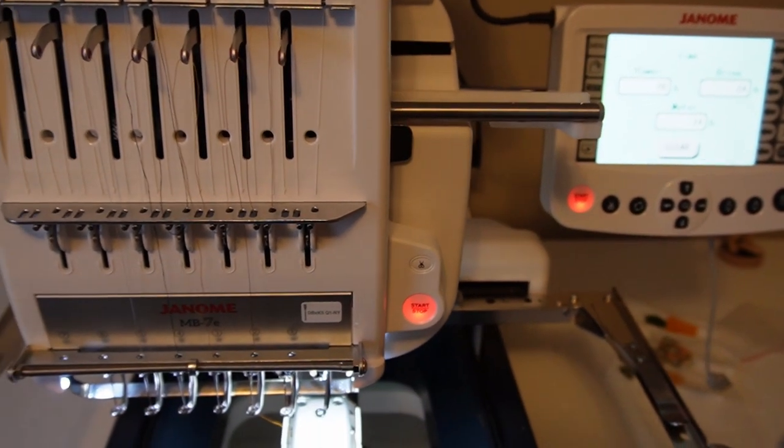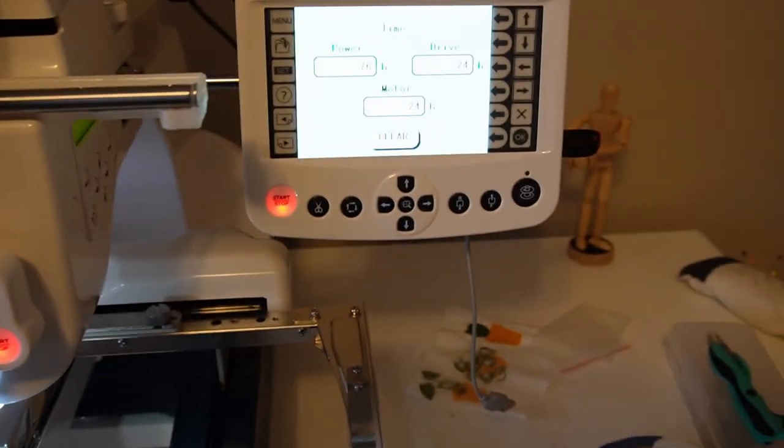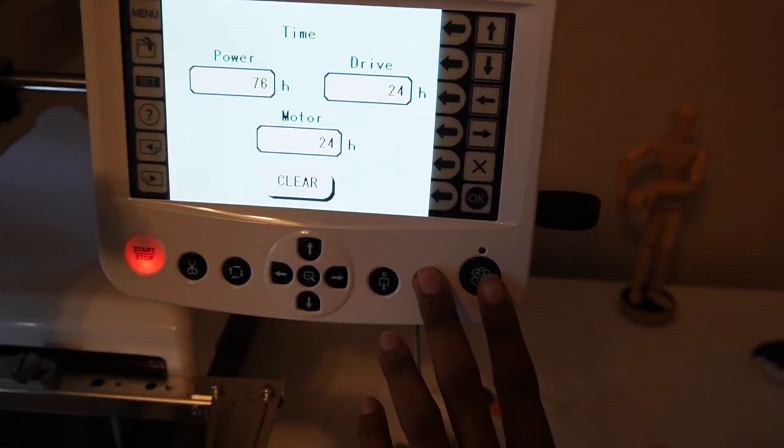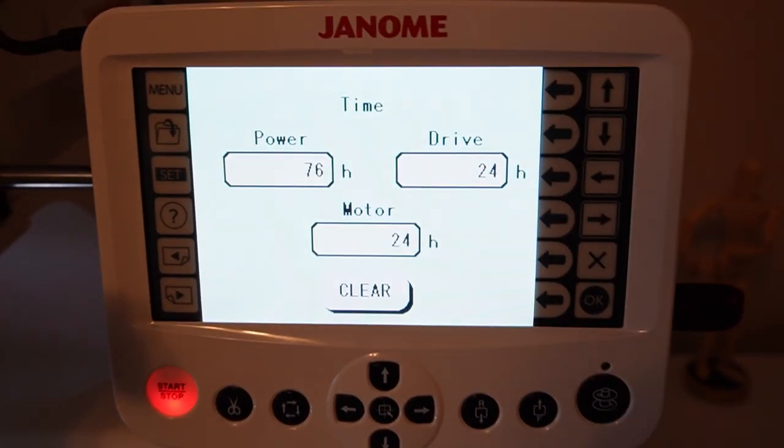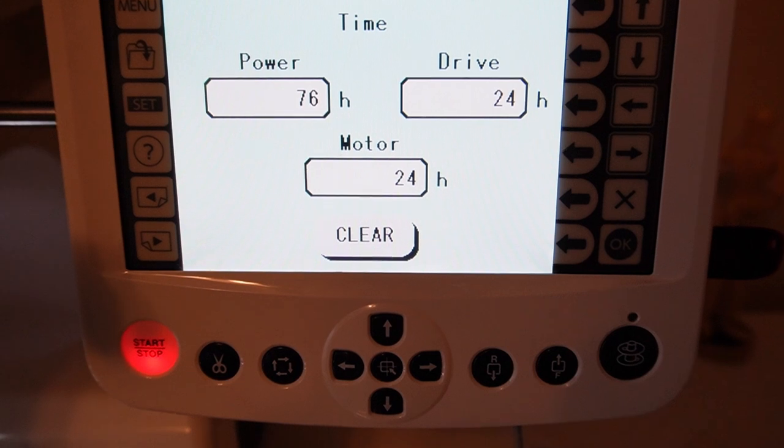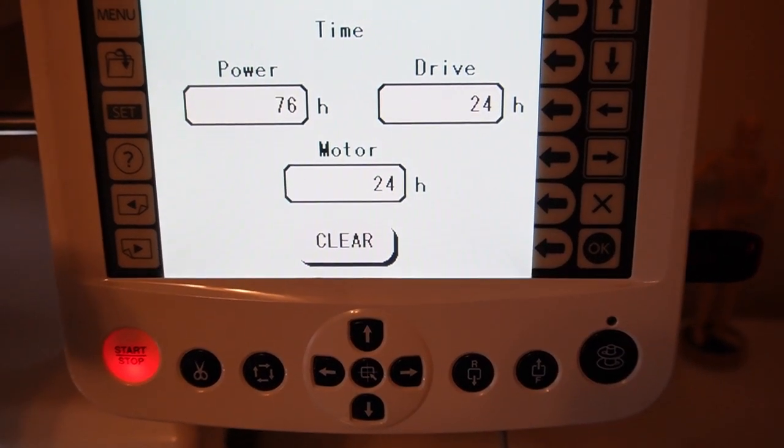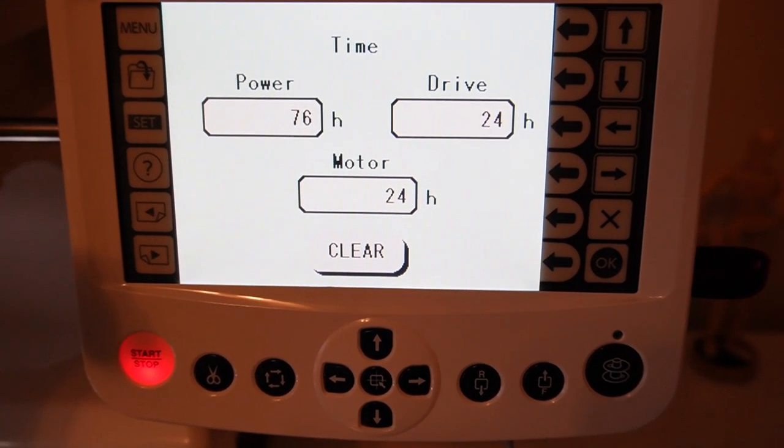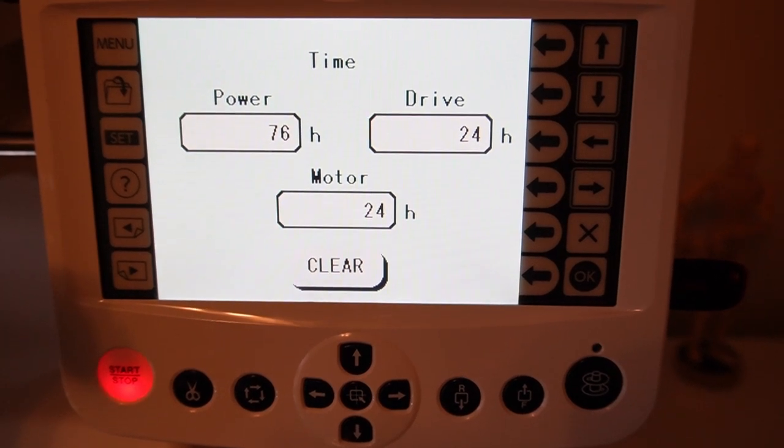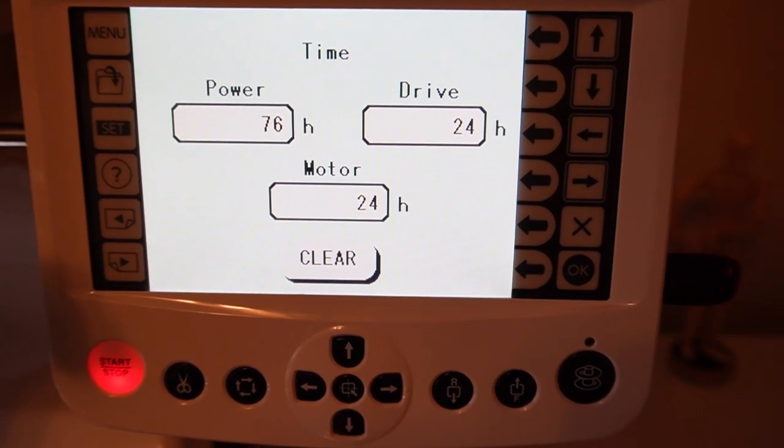So when you turn on the Janome MB4 or MB7, when we first power the machine on, you press these two buttons right here and hold them. And then it will pull up the amount of time that you've had sewing on the machine. I've had 24 hours sewing on the machine, but once I get to 1000 hours, then the motor has to be replaced.